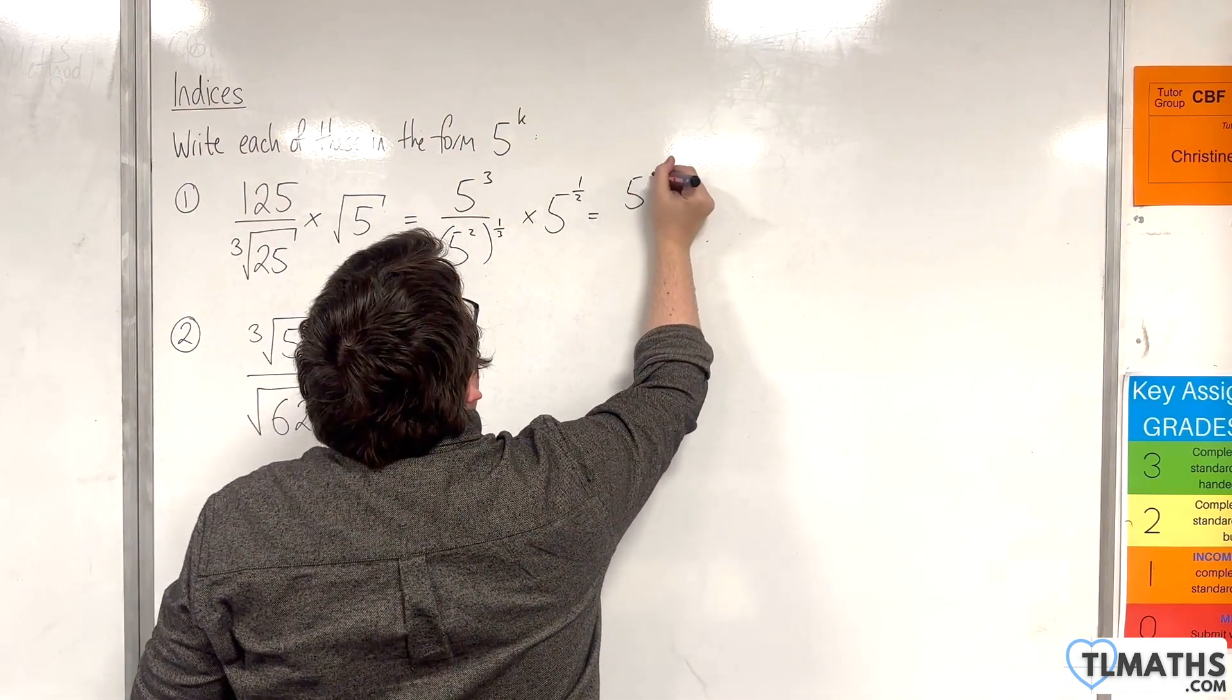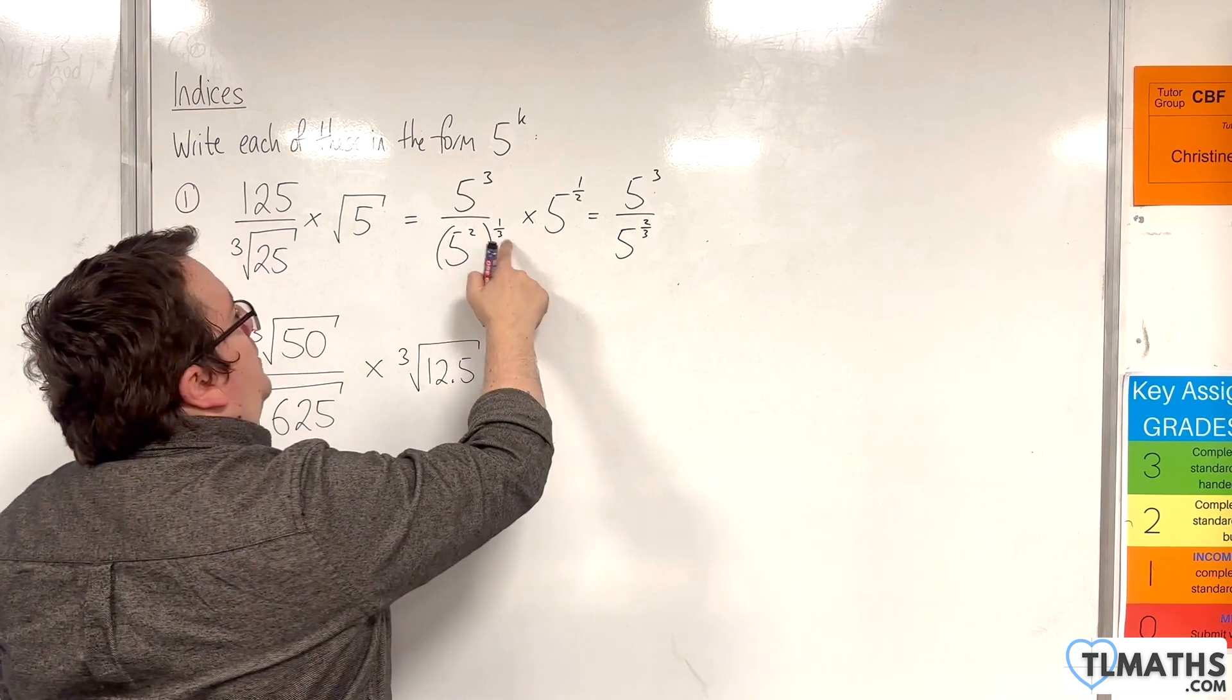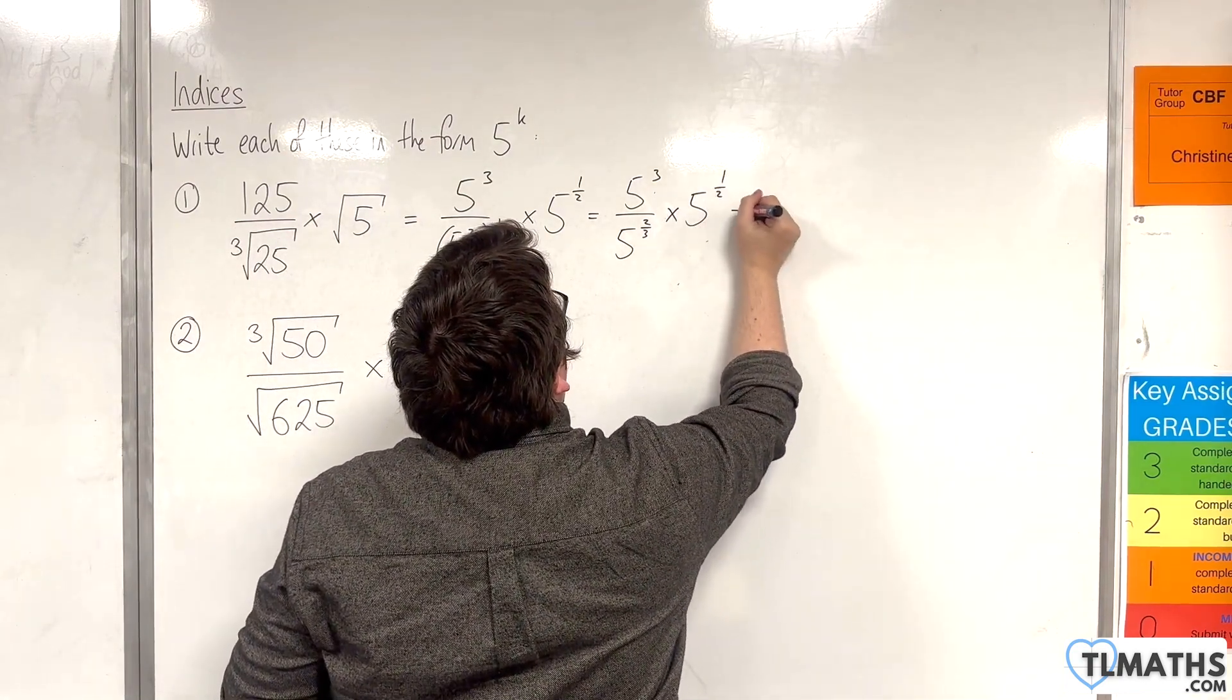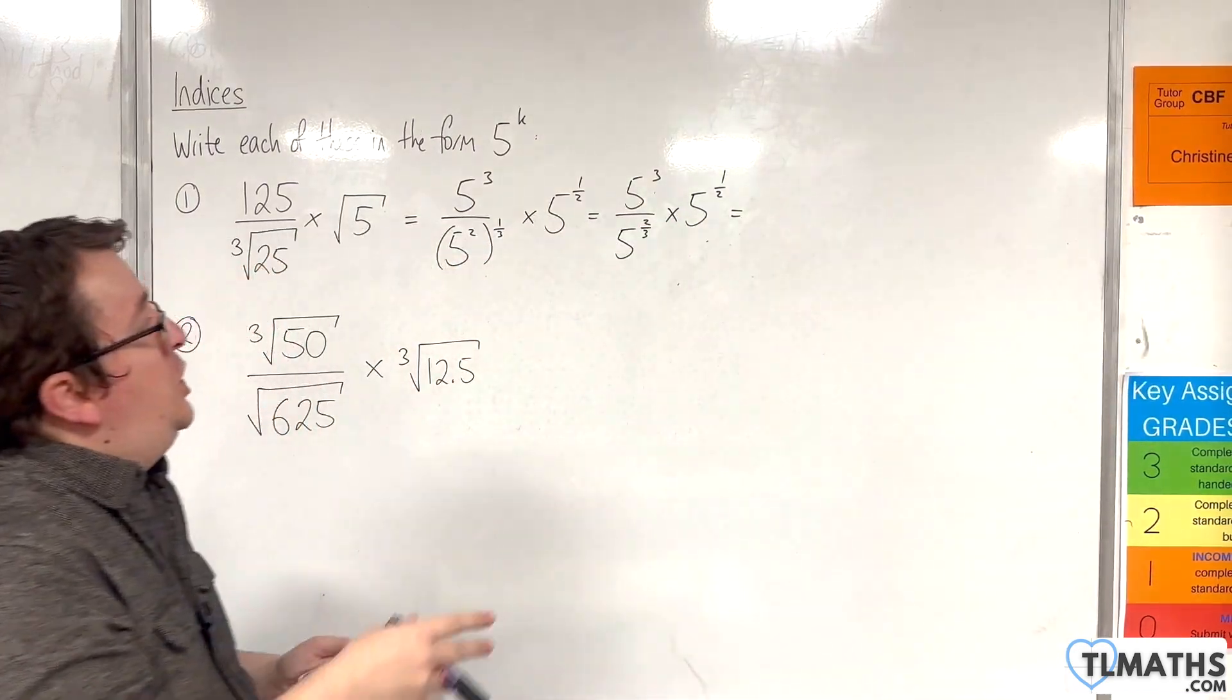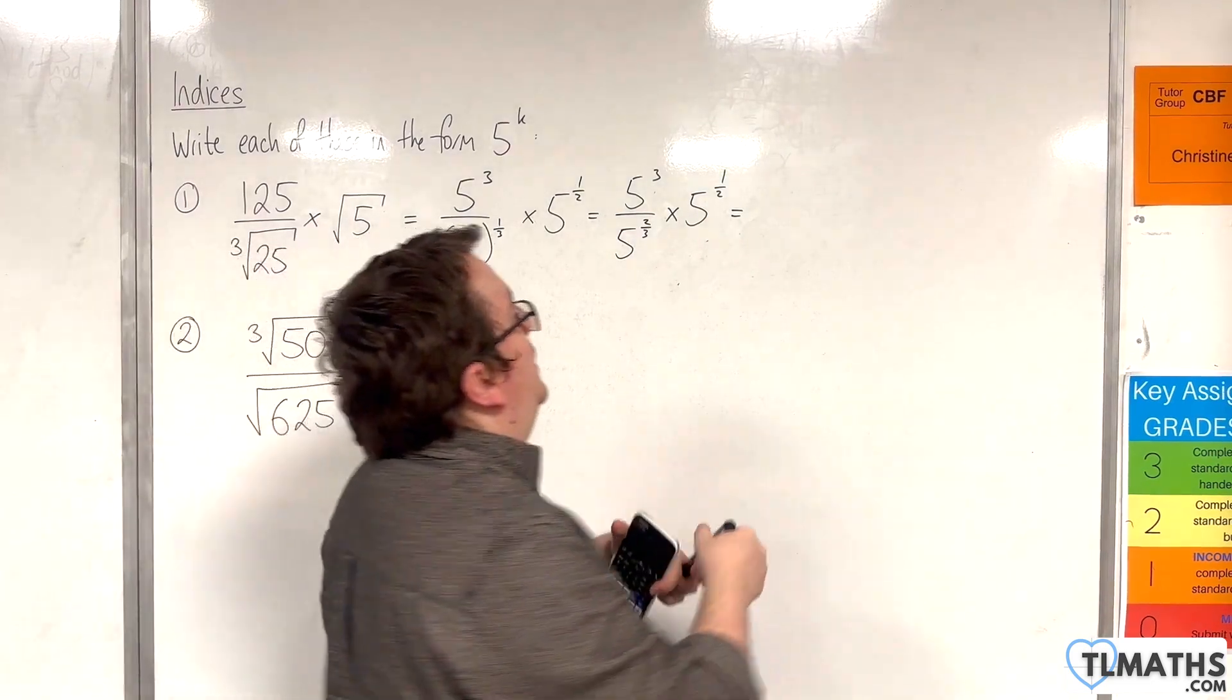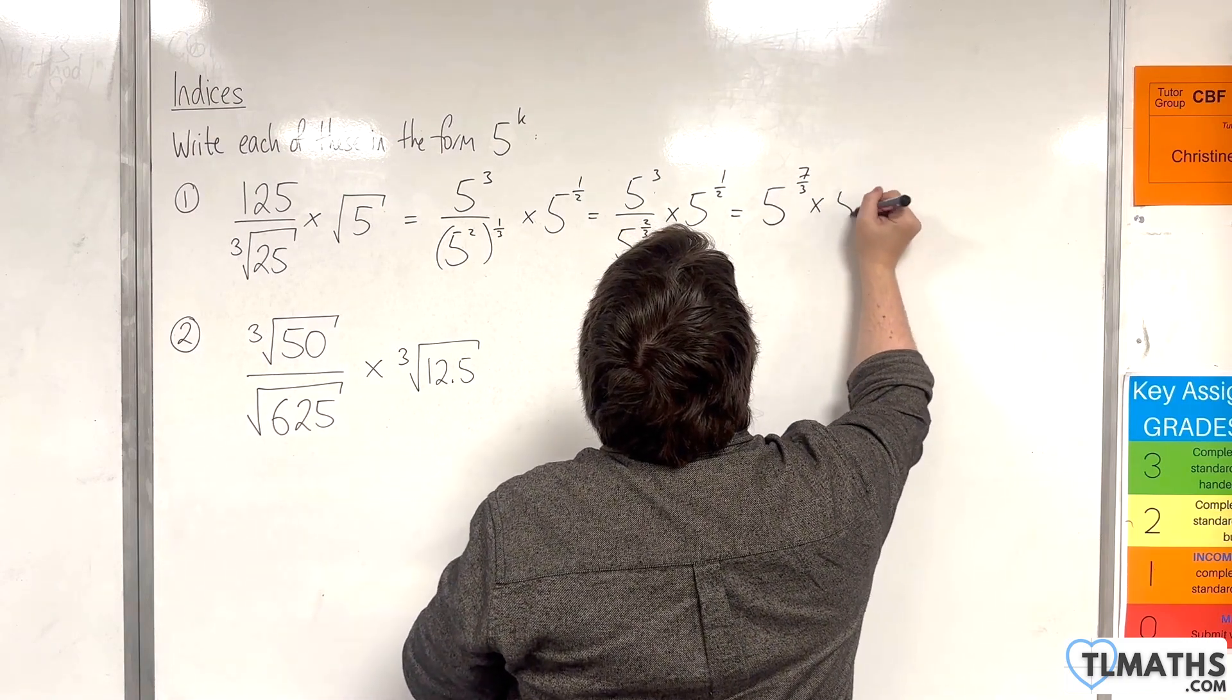So we can write that as 5 cubed over 5 to the power of 2 thirds, 2 times 1 third, and then we've got times by 5 to the power of 1 half. Now here we've got 5 cubed divided by 5 to the 2 thirds. So 3 take away 2 thirds is 7 thirds, so 5 to the 7 thirds times by 5 to the half.